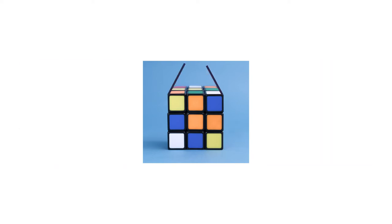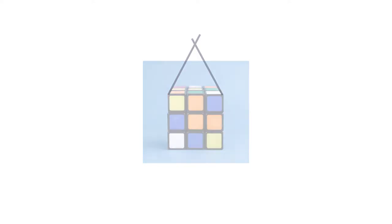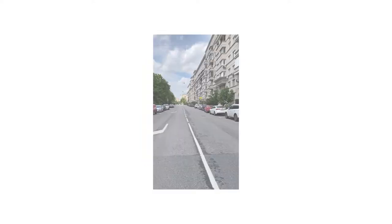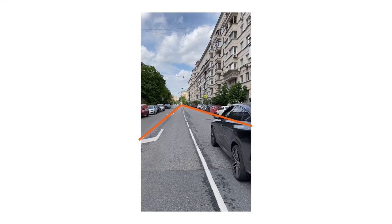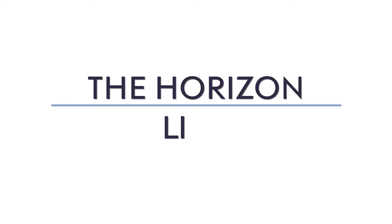And if we extend these horizontal edges, they will cross somewhere — remember the road photo. So they will cross at one line. This line is called the horizon line.